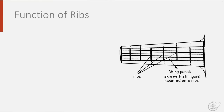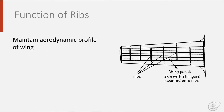Today we will look at an important structural element in wings: the rib. Ribs have an important function in wing design. They ensure that the wing maintains the aerodynamic shape or profile, so the lift is generated as designed by the aerodynamicist.